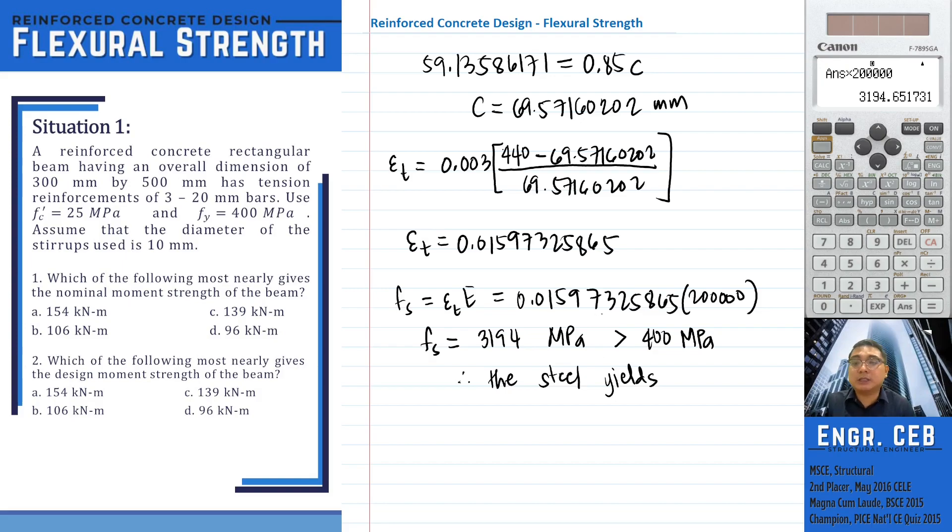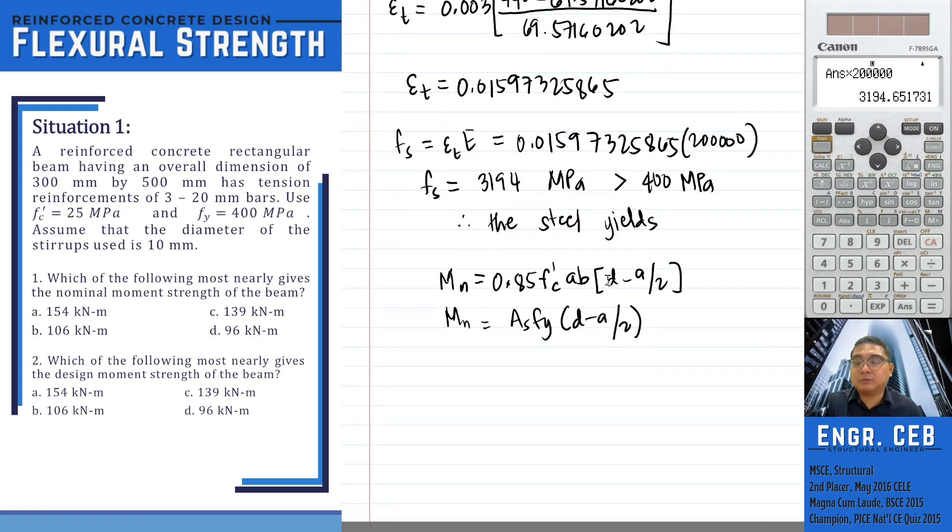We can now proceed in determining the nominal moment strength. For the nominal moment strength, we can compute that using either of the two formulas: 0.85 FC prime AB times D minus A over 2, or AS FY times D minus A over 2. Take note, these are the same because if you recall, previously we have equated the value of 0.85 FC prime AB to AS FY. So we are sure these two equations will give the same values.